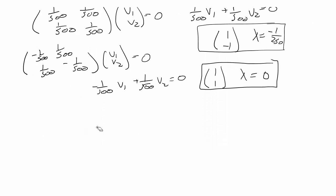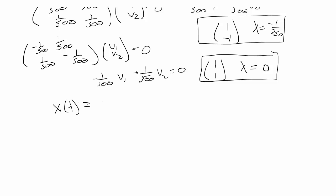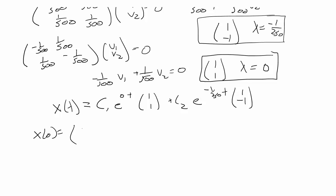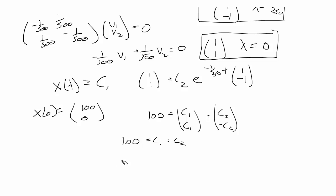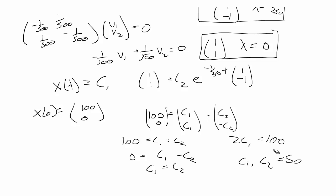We now have enough to write the general solution. x(t) = c1·e^(0·t)·[1,1] + c2·e^(-t/250)·[1,-1]. Since we have the IVP x(0) = [100, 0], plugging in t=0: [100, 0] = c1·[1,1] + c2·[1,-1]. This gives the system: 100 = c1 + c2 and 0 = c1 − c2. Solving: c1 = c2, so 2c1 = 100, meaning c1 = c2 = 50.